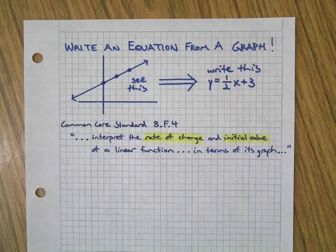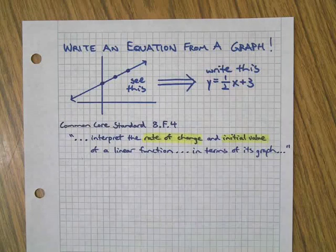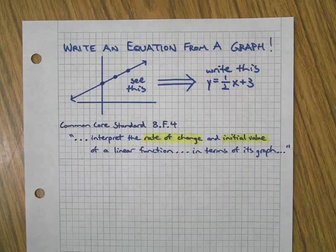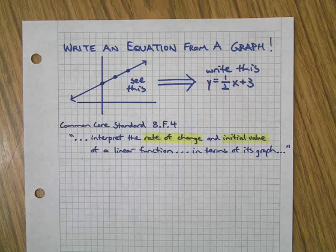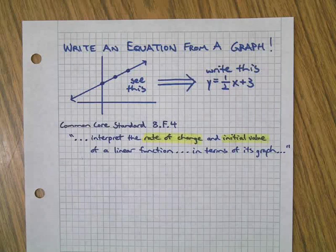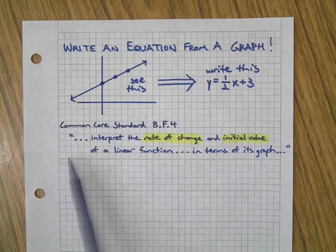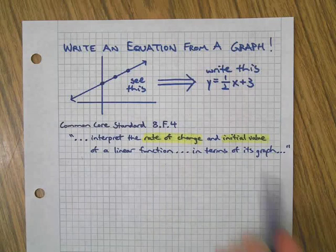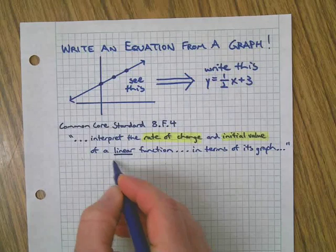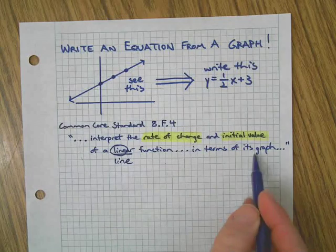This is when you see something like this. When we're done with this video, you're going to be able to write the equation that goes with it without having to use a table or any other method, just by your visual skills, what I'm going to teach you. This is Common Core Standard 8.F.4, which I have partially quoted here because we're going to focus on the language, rate of change and initial value of a linear function. That means it just makes a line. That's why the word line is in there. And graph.